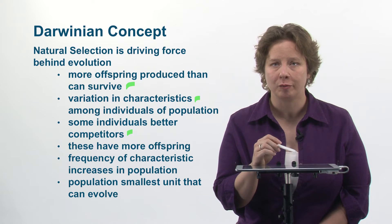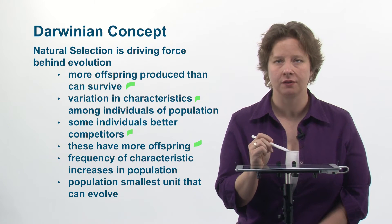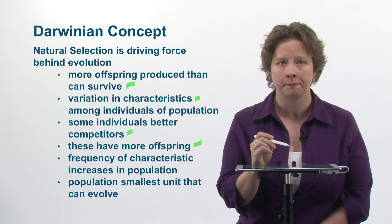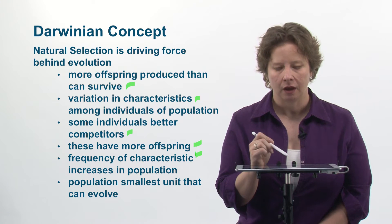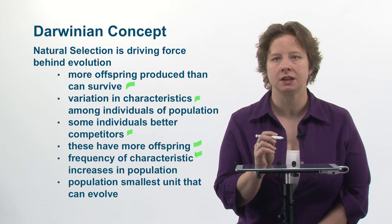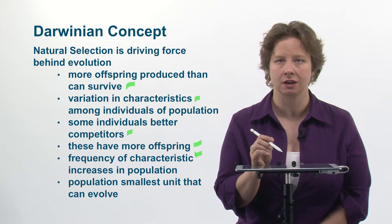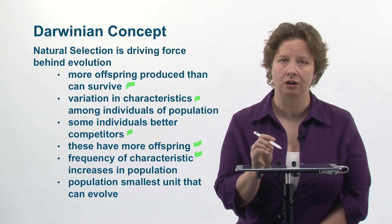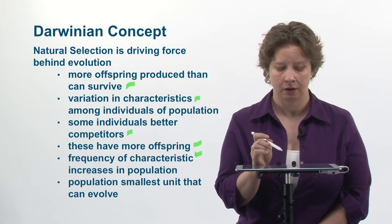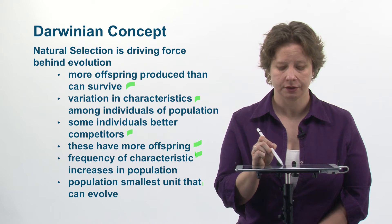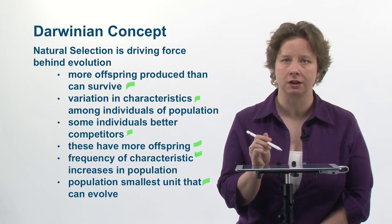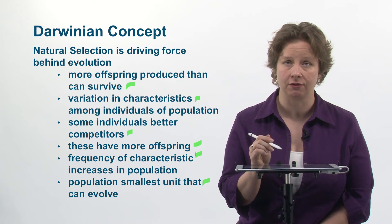The better competitors have more offspring than those that don't compete as well, and therefore we expect the frequency of a particular characteristic that is better to increase in a population over time. He also pointed out that a population is the smallest unit that can actually evolve.